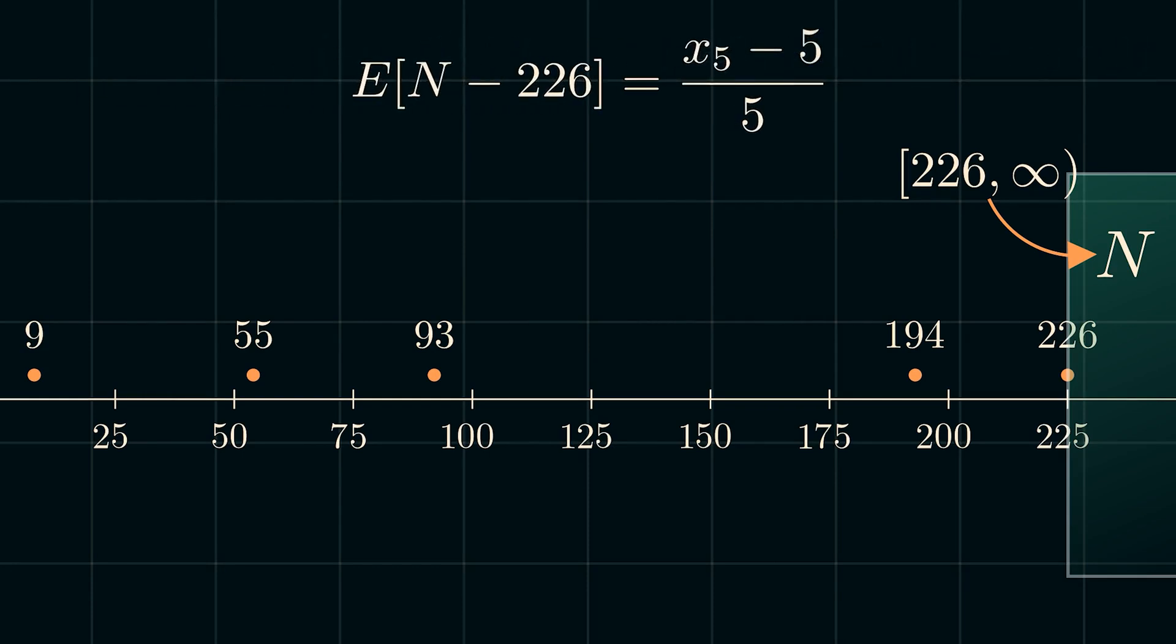You'll notice, like before, the x's cancel, leaving us with the highest serial number among the captured tanks. So we have 226 minus 5 divided by 5, which is equal to 221 divided by 5, or approximately 44.2. Now we add 226 from the other side to get our estimate that there are a total of 270 tanks.